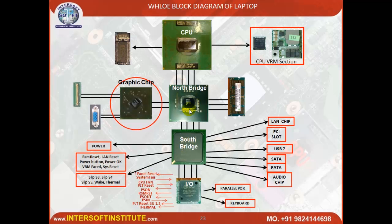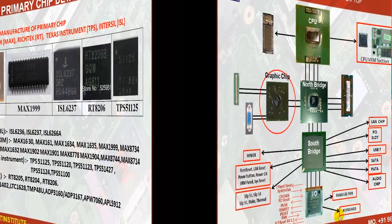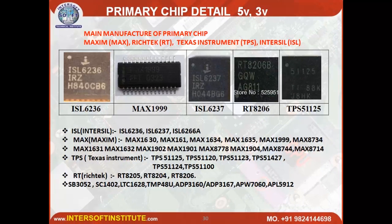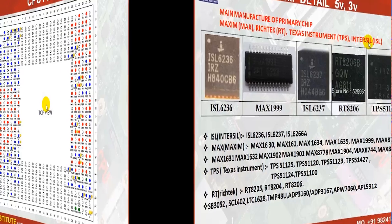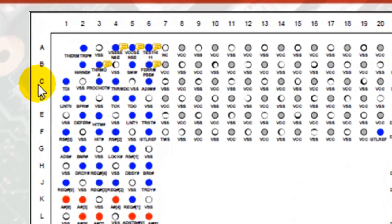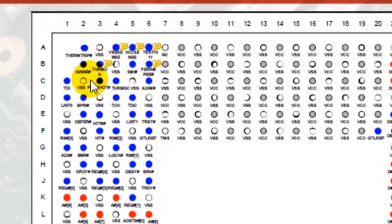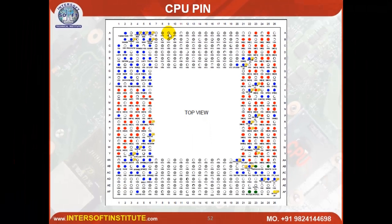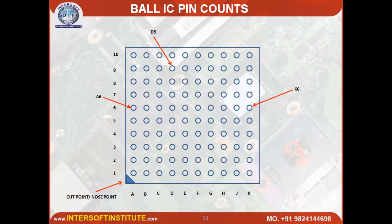The whole board connection is: CPU, North bridge, South bridge. North bridge is connected with the graphic IC and RAM. South bridge handles I/O IC and parallel keyboard. Different ICs are used in different motherboards and laptops — primary and secondary. The main manufacturers are Macs, RT, Texas Instruments, and ISL. ICs are addressed using dot notation like ABCD1234, for example A9 or D9.